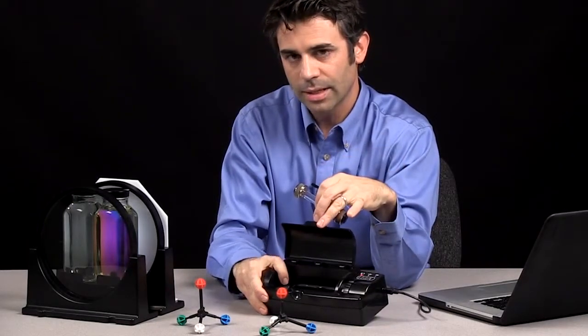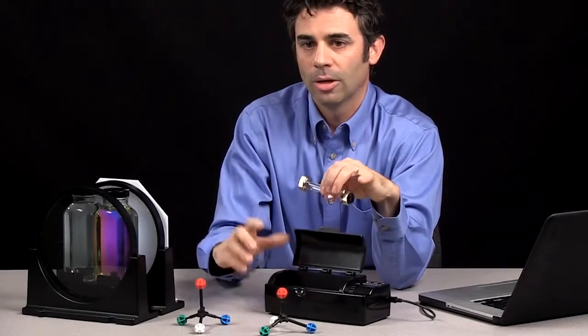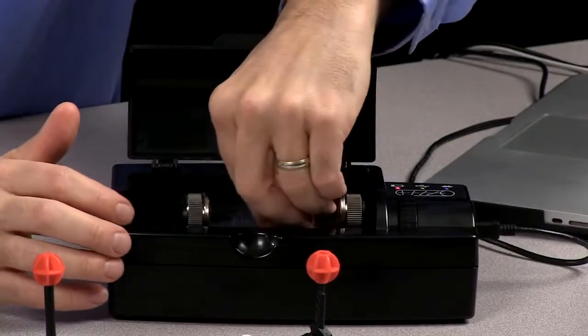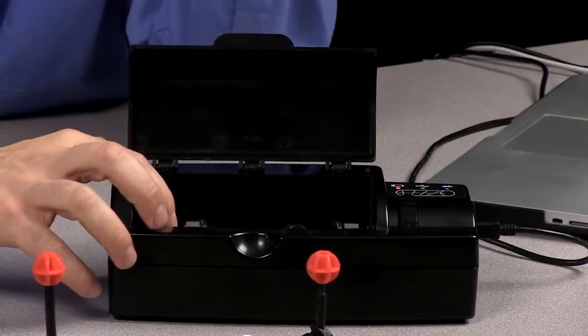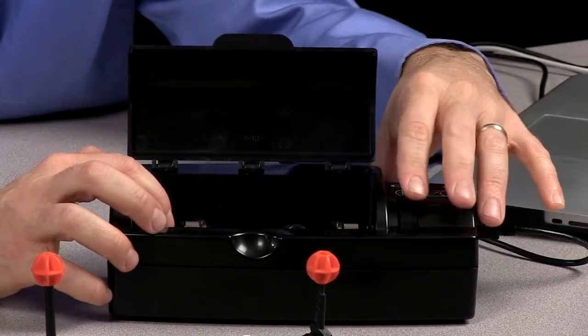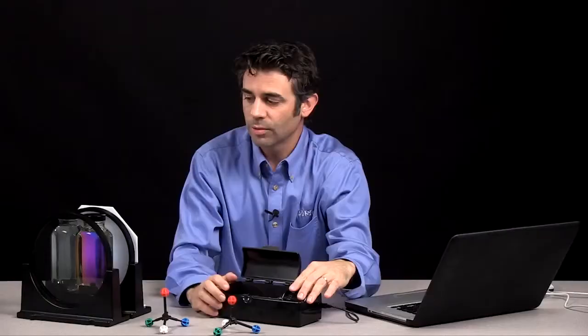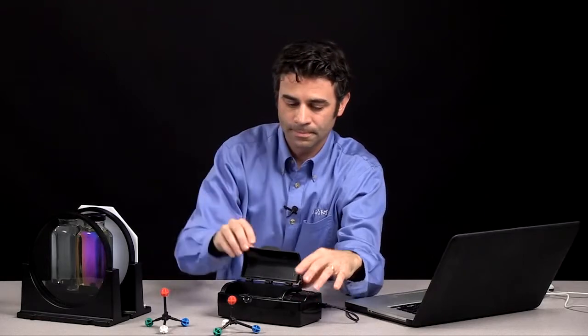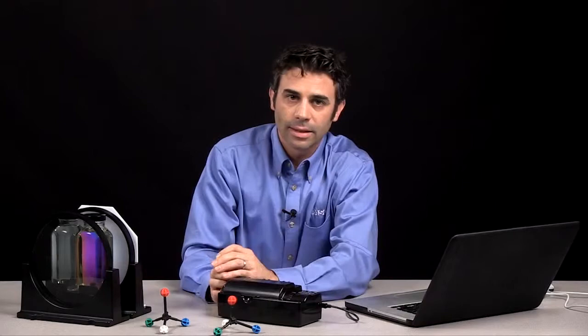In the polarimeter, there is a 589 nanometer monochromatic light going through a polarizing film on this end and a polarizing film on this end in front of a detector that I can rotate around, just like I could rotate this around. So I have monochromatic light that's getting plane polarized, going through my sample, and hitting a detector.